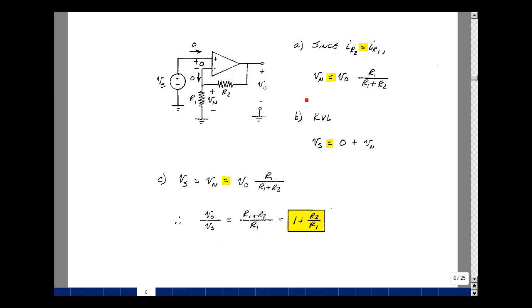Now what's V_N in terms of V_S? We'll just go around the loop here. The rise in voltage would equal the drop. So V_S is equal to zero plus V_N. Then I could say that V_S is equal to V_N and that's equal to V_out times R1 over R1 plus R2.